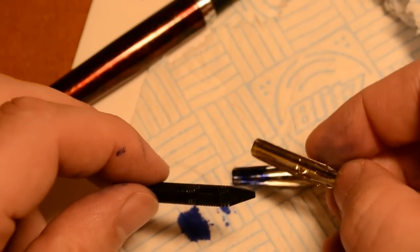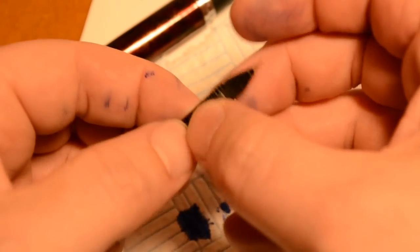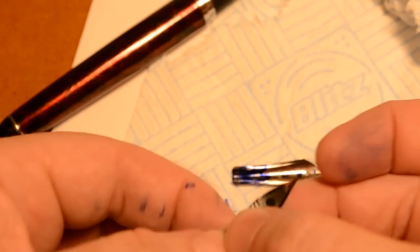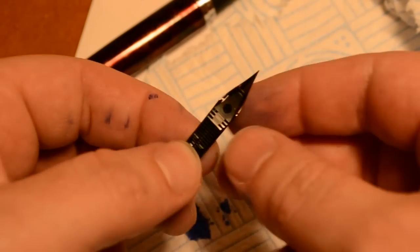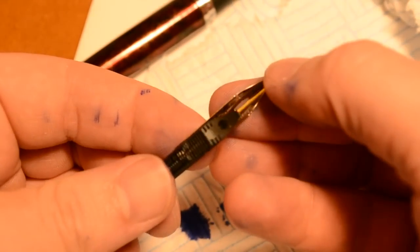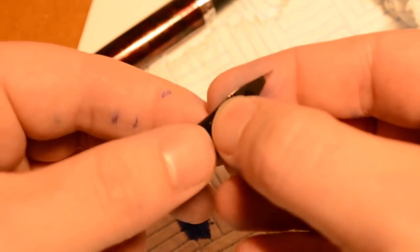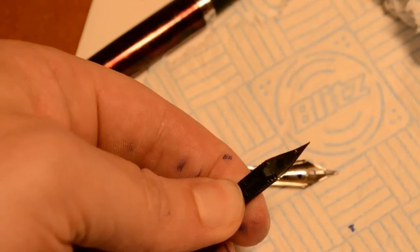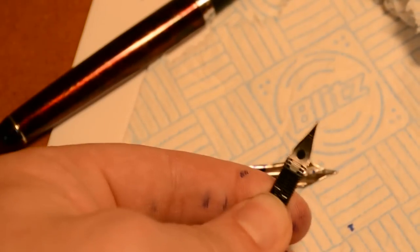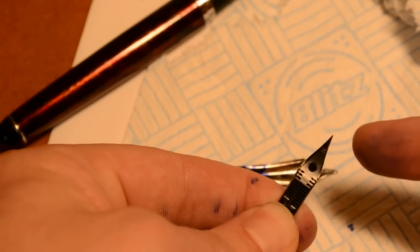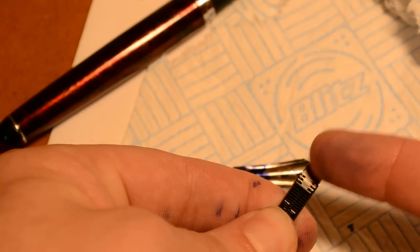What you might find when you put the two together is when you put the Zebra G behind the feed, if you hold the two together, and hopefully you can see where the two meet...